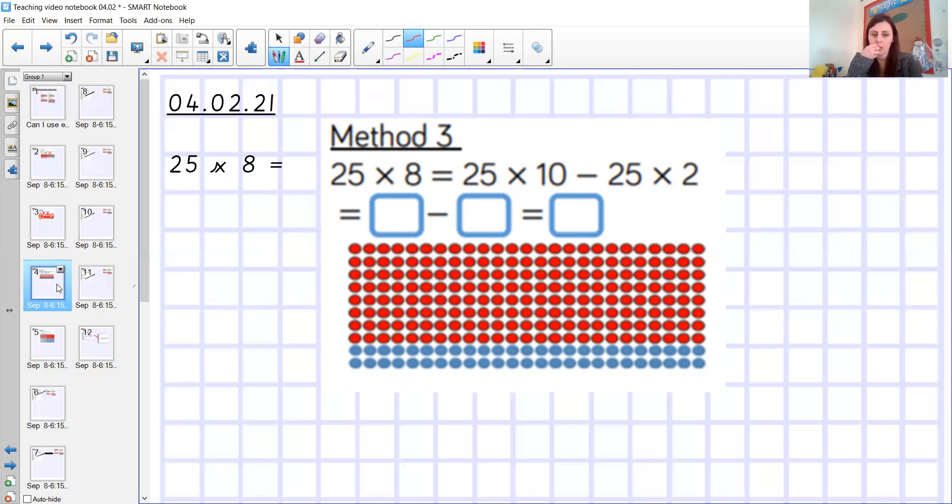Method number three. So this is something a little bit different again. So this way, what we've done here is we've got 25 times 10. So obviously that's going to give us a bigger answer than what we need. But it might be easier mentally to use a 10 than it would be to use an 8. So if you can think about it easily, quickly now in your head, 25 times 10 is 250. And then very easily in your head as well, you can do 25 times 2 because you're just doubling because you're multiplying by 2, which gives you 50.